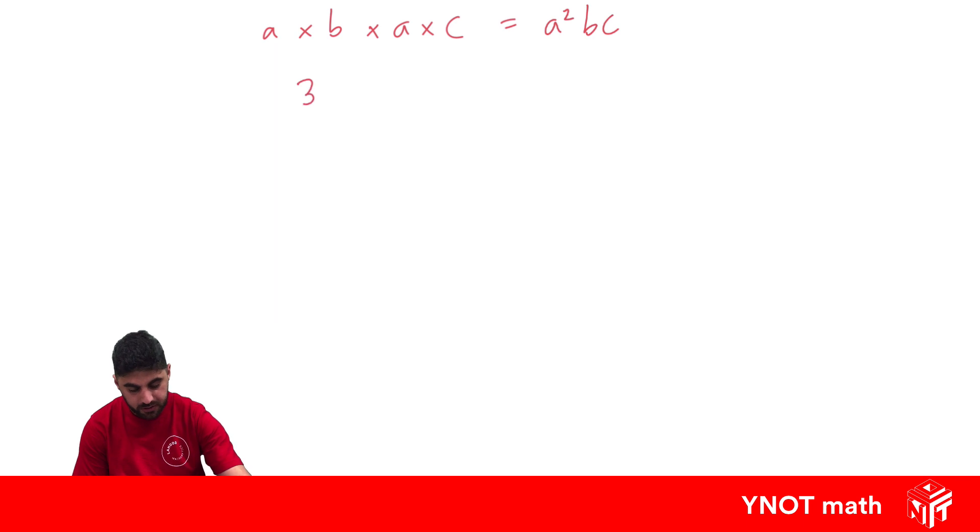What about 3a times 4a? So this time we've got some coefficients. We've got a coefficient of 3 and a coefficient of 4. We deal with them first. 3 times 4 is 12. Then a times a is a squared.